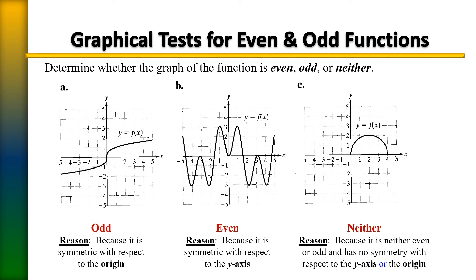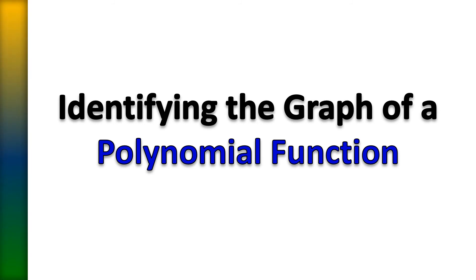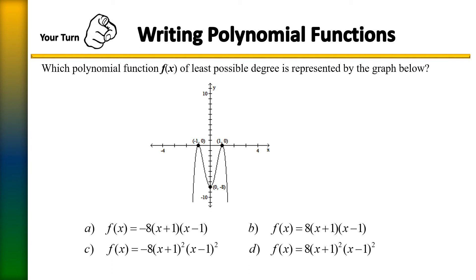And there you have it — odd, even, and neither. Now, identifying the graph of a polynomial function using everything we've learned. I want you to take a look at this polynomial function and determine, based on everything we've learned about multiplicities, leading coefficients, behavior of graphs, odd and even functions, and symmetry about the x and y axes — which equation best matches the graph?